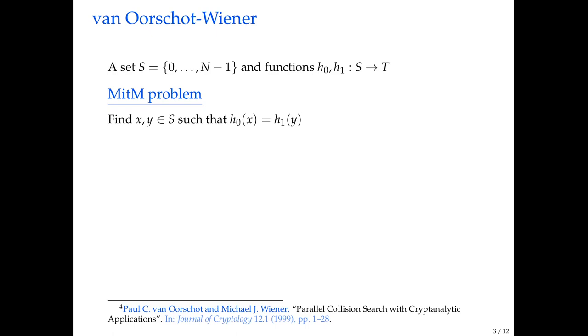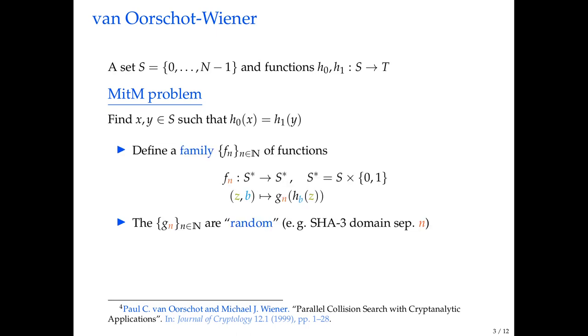This is Van Oorschot-Wiener. I didn't actually explain how Van Oorschot-Wiener worked. As it's such an important algorithm, I want to spend some time going through it. The problem it solves is a meet-in-the-middle problem. We have two functions, h0 and h1, that map from some set S. These are just the integers from zero to N minus one to some other set T, which in this case are going to be the nodes in our graph. You want to find some x and y such that h0 and h1 collide.